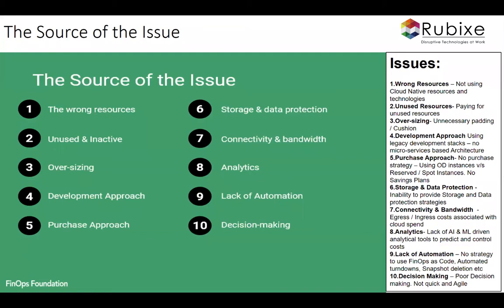Connectivity and bandwidth follow the same principle as storage and data protection. Any cloud — AWS, GCP, Azure, Oracle Cloud — doesn't charge you a penny for writing data into them, only the storage cost. But when you start reading that data out into other applications, that's called egress, and that's when they charge you. These charges are minuscule individually, but the volume of data that traverses is huge, so you end up with very large monthly bills that can explode if not controlled.